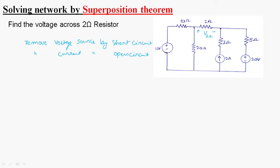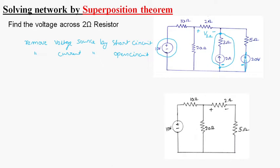Initially, we are considering the response of the 10 volt voltage source only. We are neglecting the 2 amp current source and the 20 volt voltage source. Neglecting the current source means we have to open circuit that branch and completely remove it. For the 20 volt voltage source, we have to short circuit it. After redrawing, we remove both the current source and 20 volt voltage source.